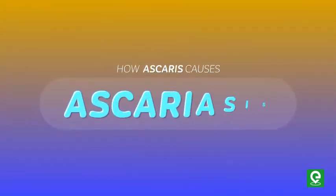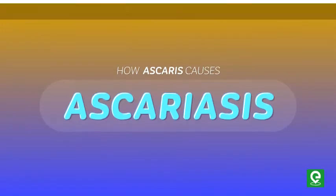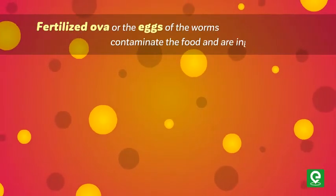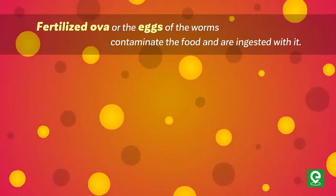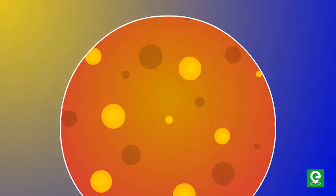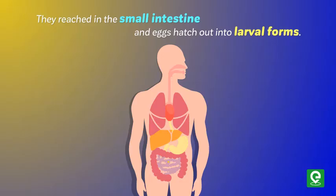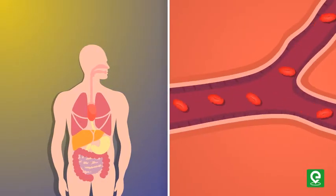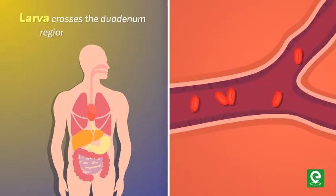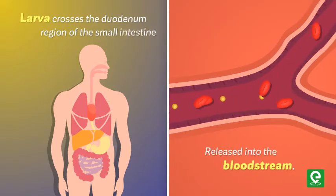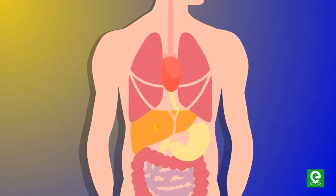In this video we will discuss how Ascaris causes Ascariasis. Fertilized ova, or the eggs of the worm, contaminate food and are ingested with it. After ingestion they reach the small intestine and the eggs hatch out into larval forms. The larva crosses the duodenum region of the small intestine, gets released into the bloodstream, and is carried into the liver and heart, then enters the lungs.